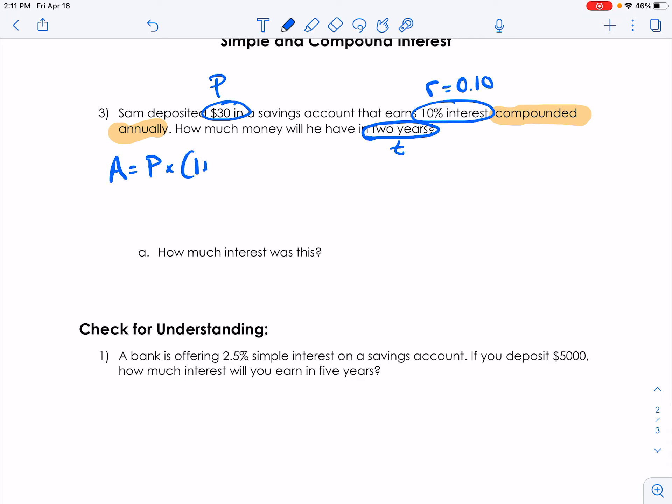So if our principal is $30 times 1 plus the rate, so that's 1 plus 0.10, so 1.10 to the second power. Remember, we have to go with order of operations.